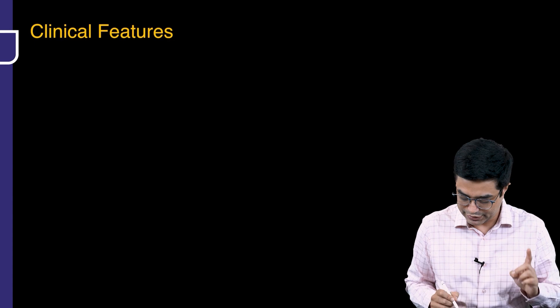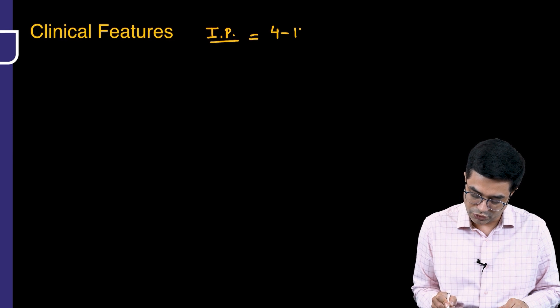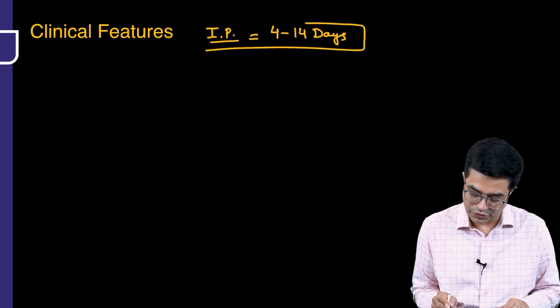What are the clinical features of Japanese encephalitis? First, what is the incubation period? The incubation period in these patients is between 4 to 14 days.